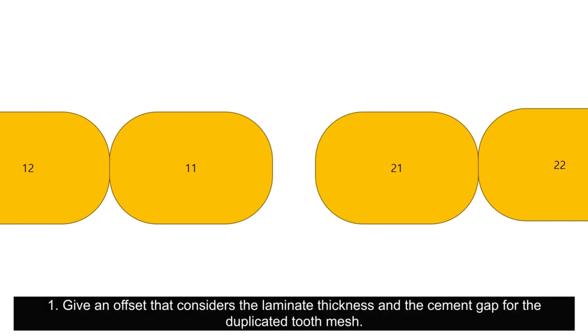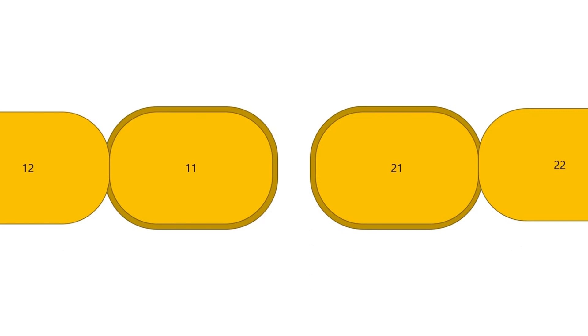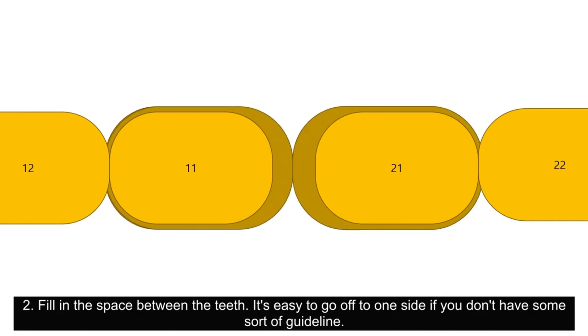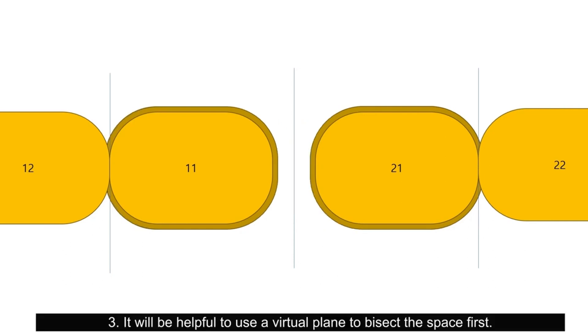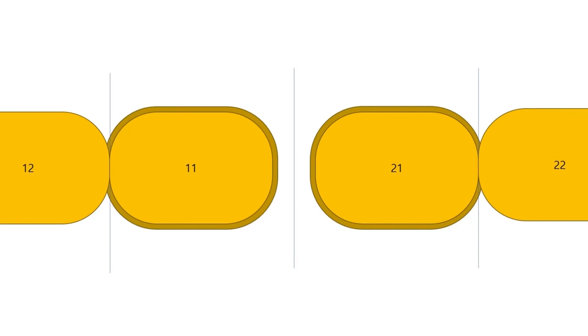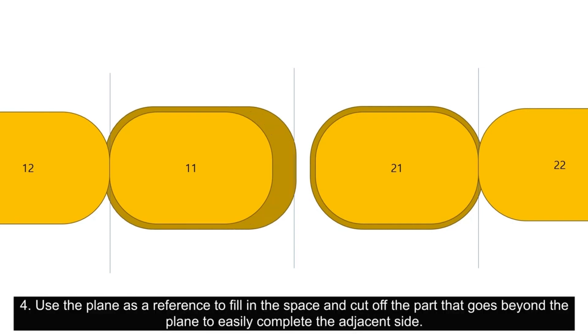Give an offset that considers the laminate thickness and the cement gap for the duplicated tooth mesh. Fill in the space between the teeth. It is easy to go off to one side if you don't have some sort of guideline. It will be helpful to use a virtual plane to bisect the space first. Use the plane as a reference to fill in the space and cut off the part that goes beyond the plane to easily complete the adjacent side.